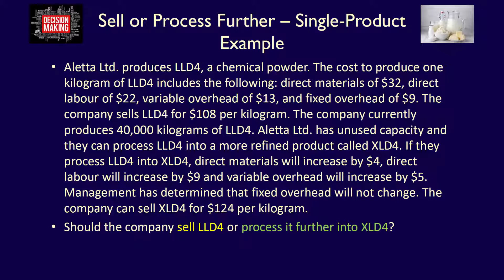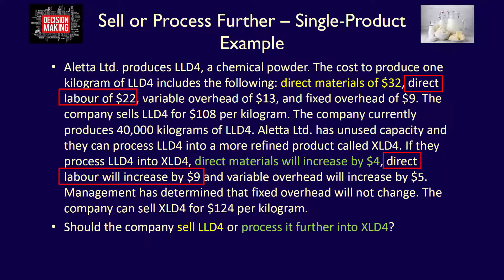Step two is to determine which costs are relevant. Remember that relevant costs are the ones that change between alternatives and happen in the future. We'll analyze each revenue and cost individually, highlighting LLD4 revenues and costs in yellow and XLD4 revenues and costs in green. The direct material cost for one kilogram of LLD4 is $32; for XLD4 it's $4 more, so $36. These change between alternatives and are future costs, so they are both relevant. The direct labor costs are also relevant.